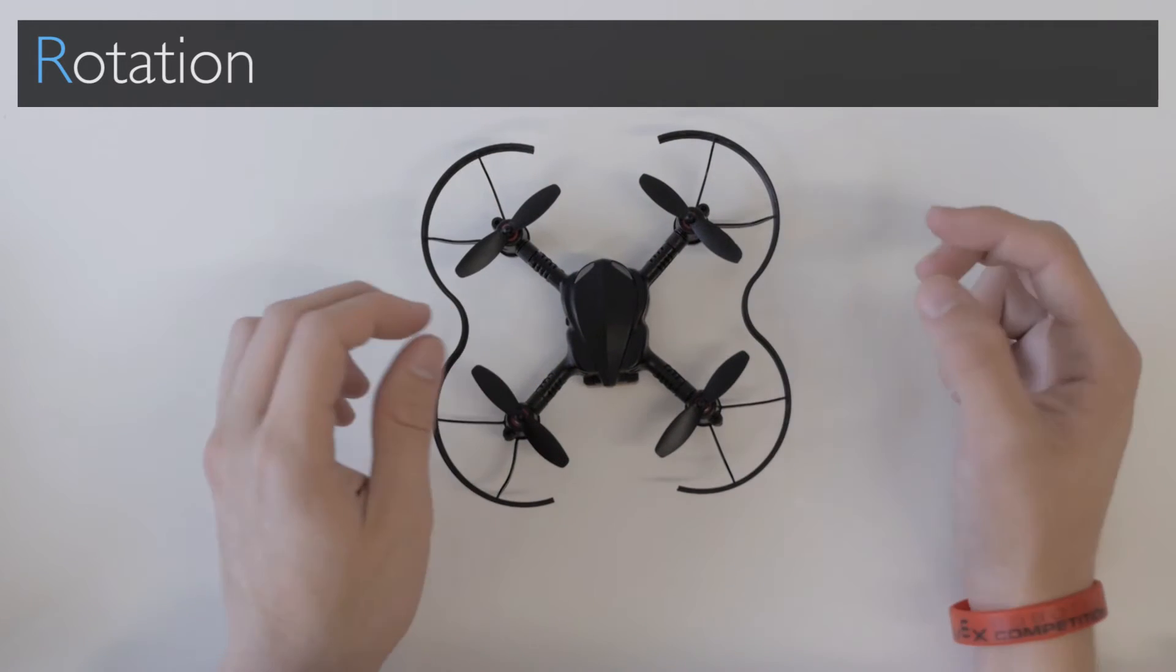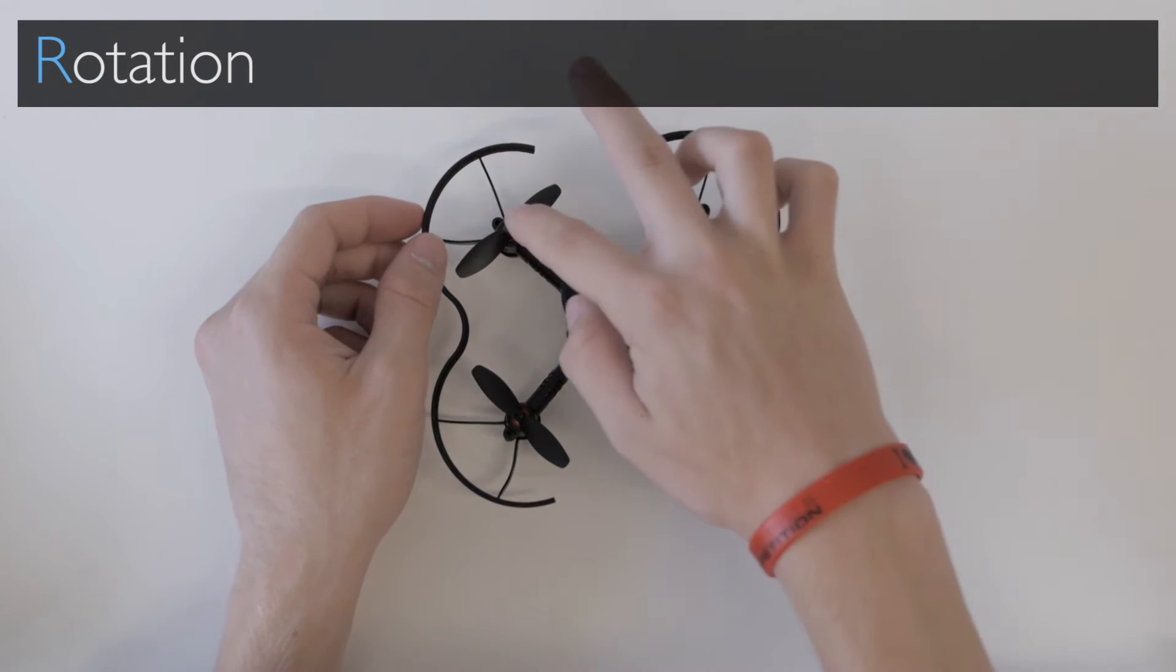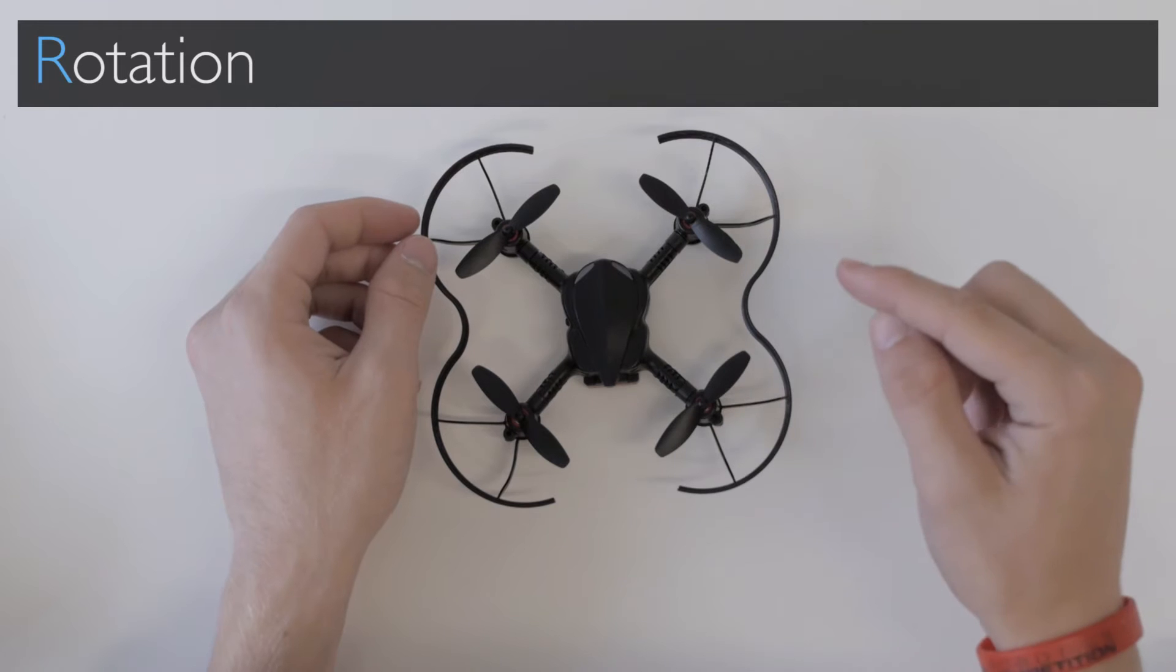Another good way to cross-check your propellers is actually by cross-checking them, because this propeller should be the same direction as this propeller.